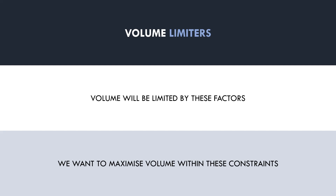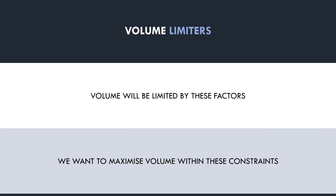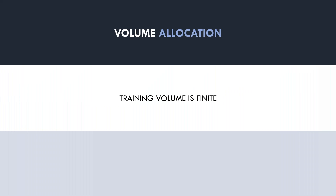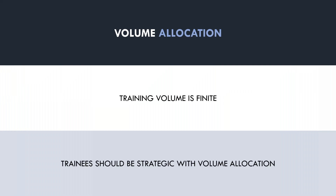So now we understand that there is a finite amount of volume we can perform each week. Because of this, we should be strategic with our volume allocation — how much volume we distribute to each muscle group. There are three primary factors which will determine how much volume we perform for each muscle group within our constraints.